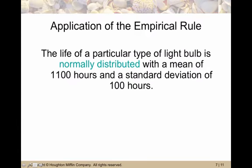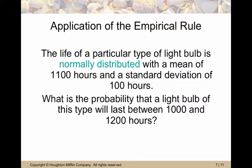Let's look at an application. The life of a particular type of light bulb is normally distributed with a mean of 1,100 hours and a standard deviation of 100 hours. What is the probability that a light bulb of this type will last between 1,000 and 1,200 hours? Well, that's one standard deviation below the mean because 1,100 minus 100 is 1,000. And one standard deviation above the mean, so 1,100 plus 100 is 1,200. And so about 68% of the observations are going to fall between those two values.